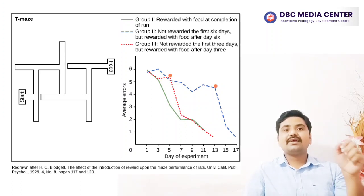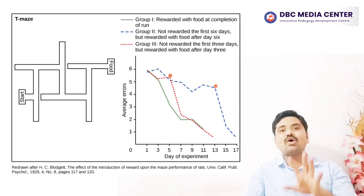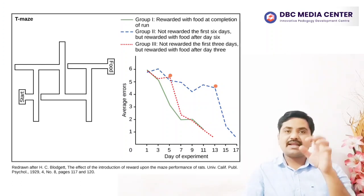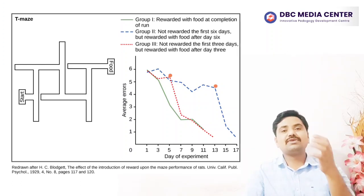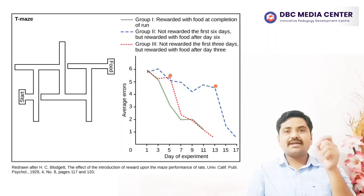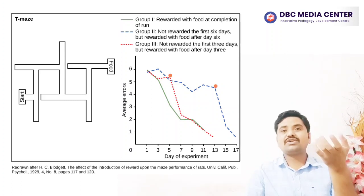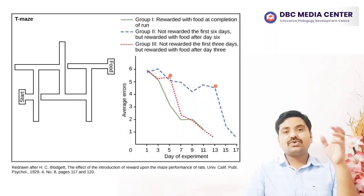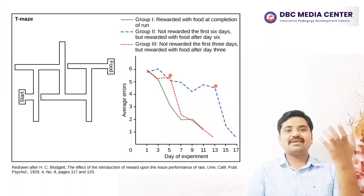These results show that rats are capable of complex spatial learning even in the absence of direct reward — in other words, without reinforcement. Later experiments confirmed that rats make a mental representation of the maze — a cognitive map — rather than simply learning a conditioned series of turns. This is all about learned behavior and its types.